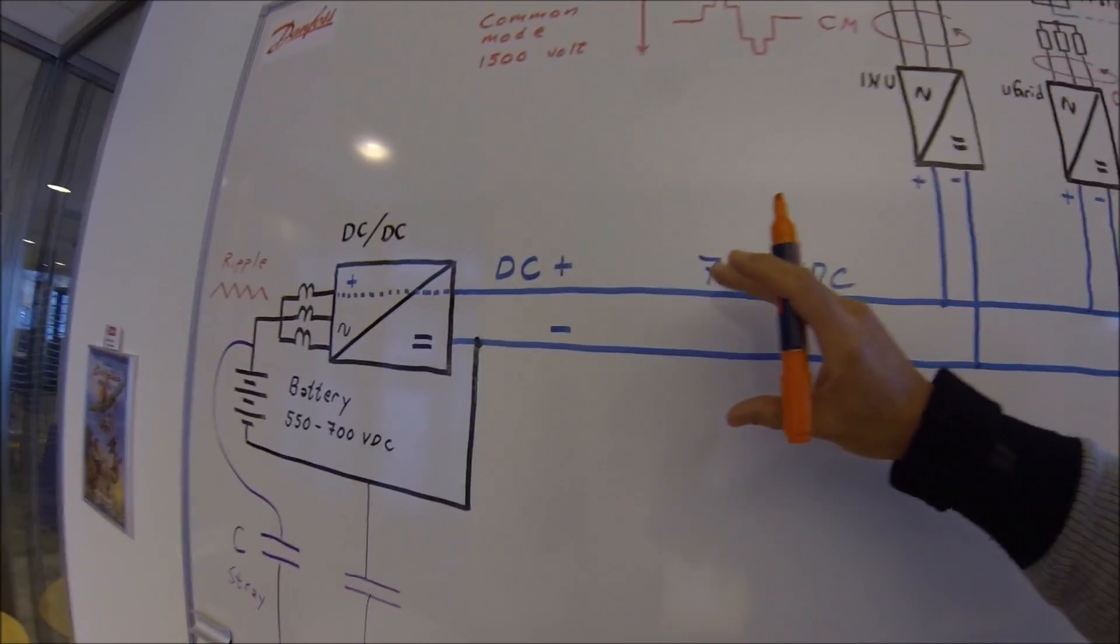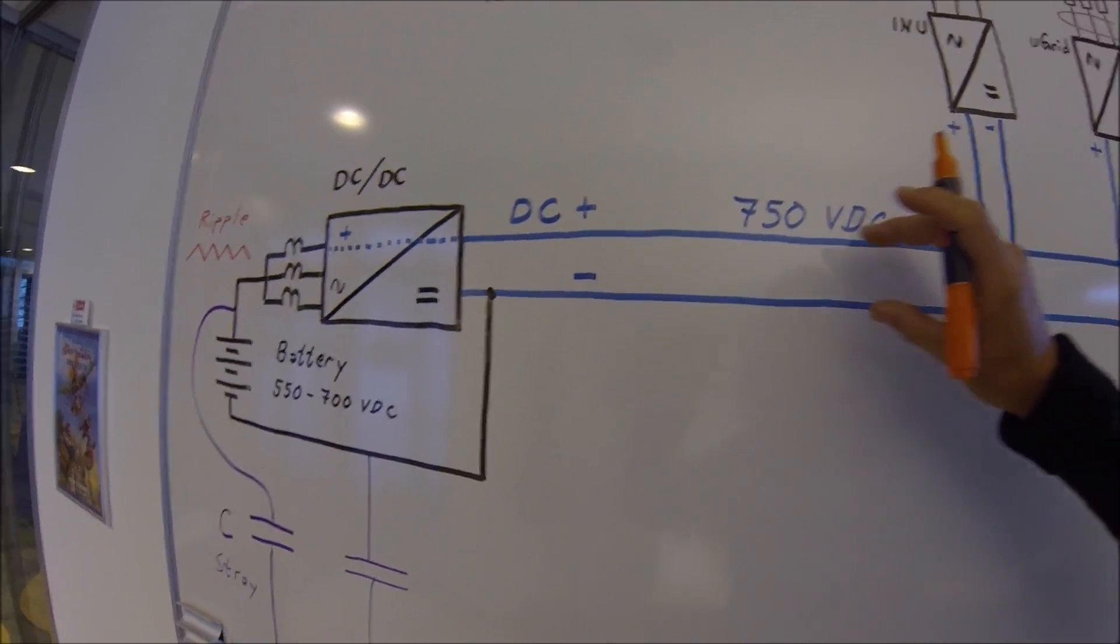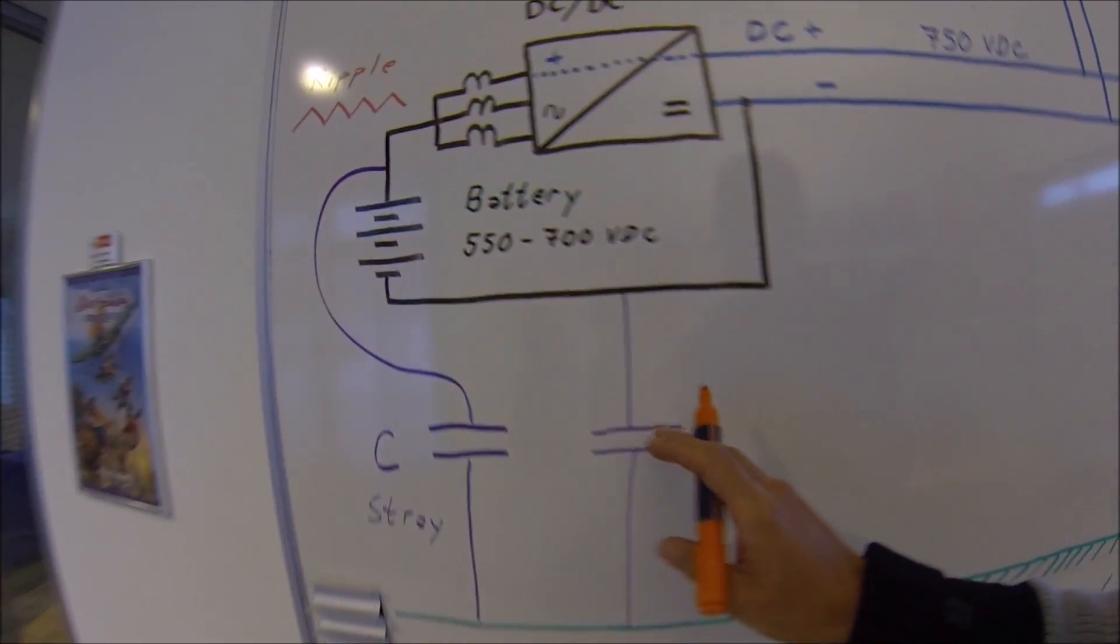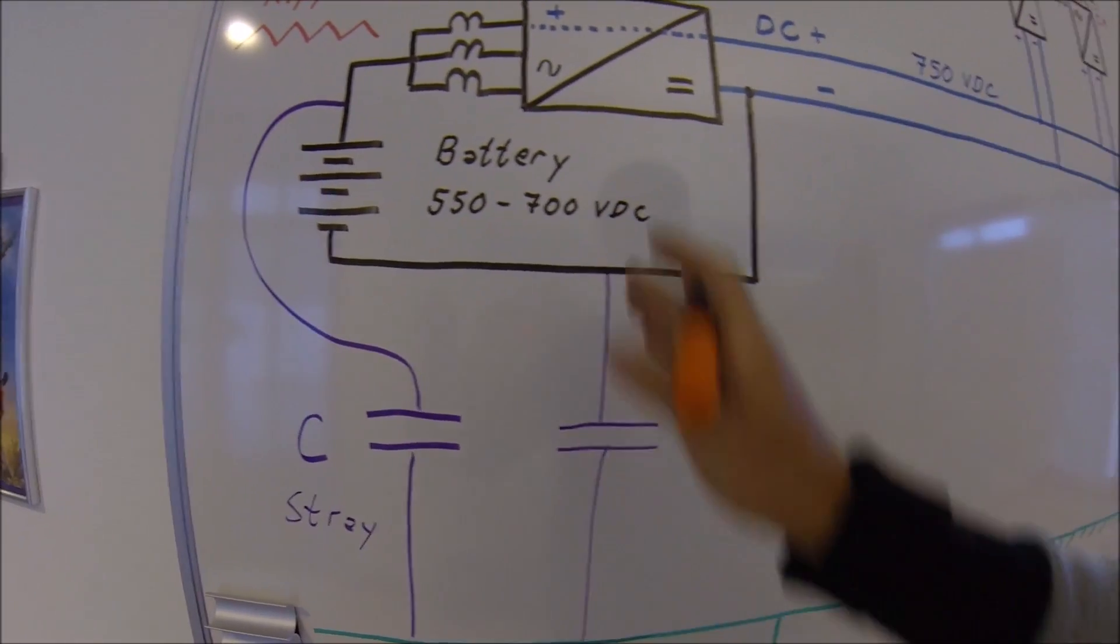Then we have to make sure that our DC bus is totally stable compared to the protective earth. We already know there is a stray capacitance here, so there is a connection here.